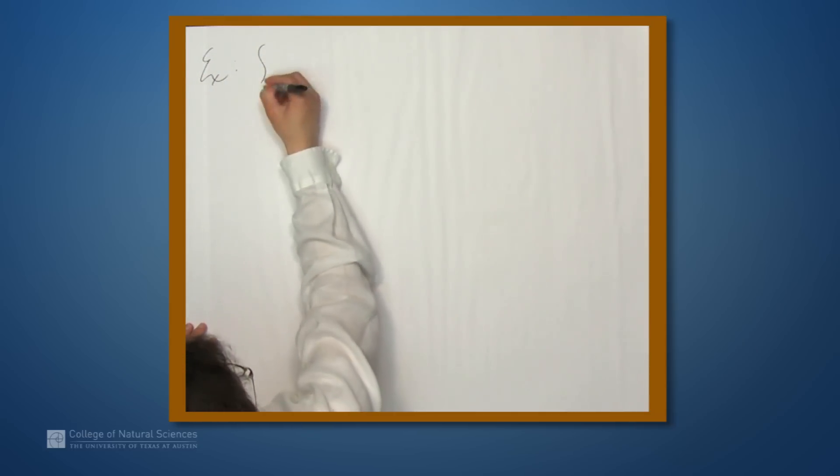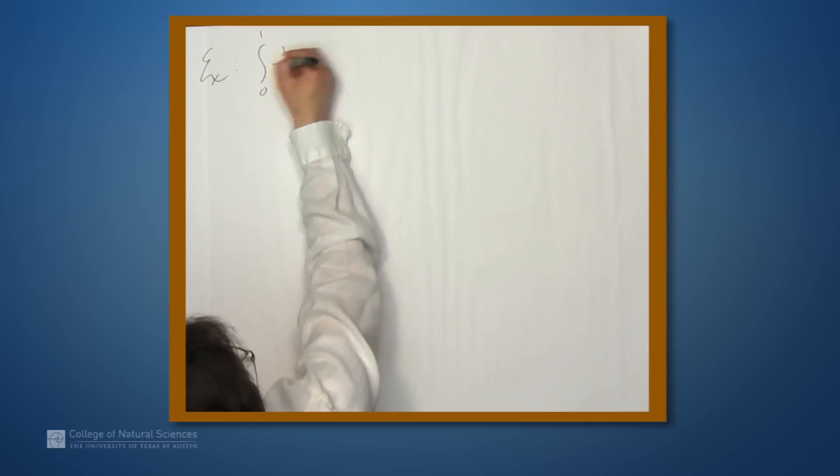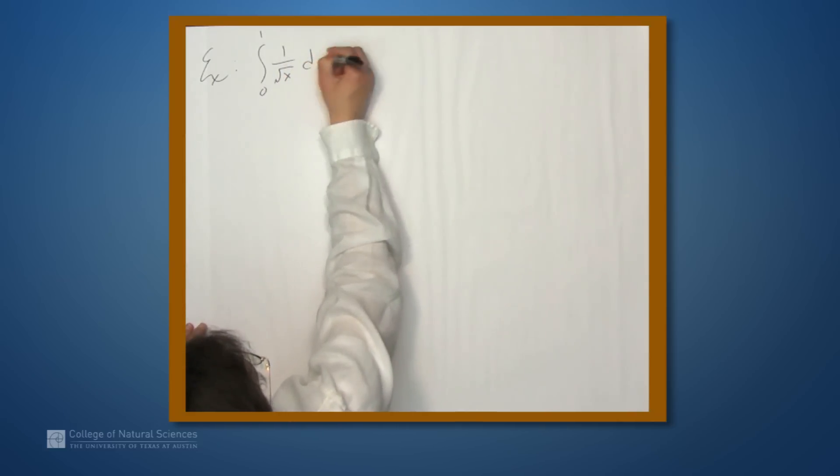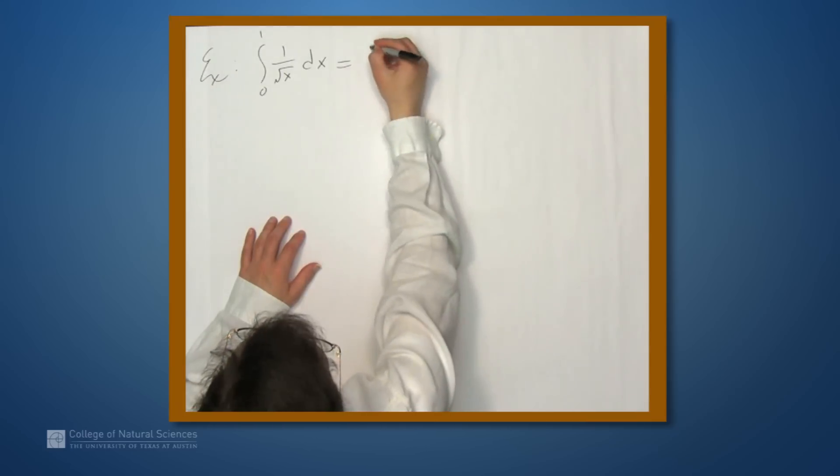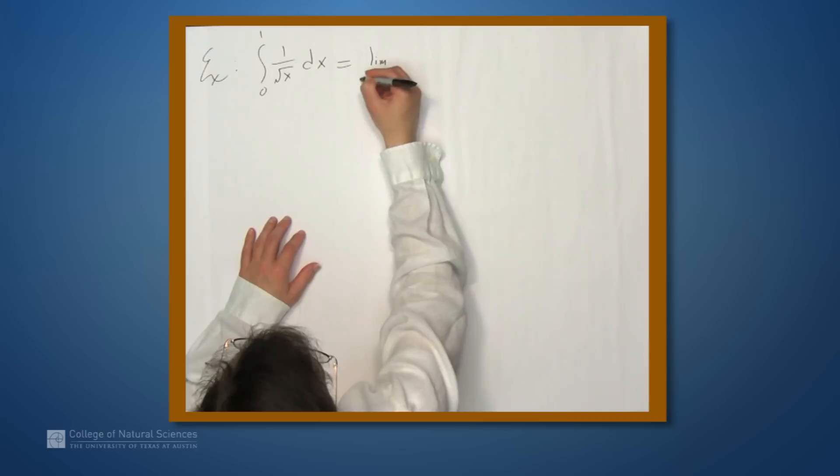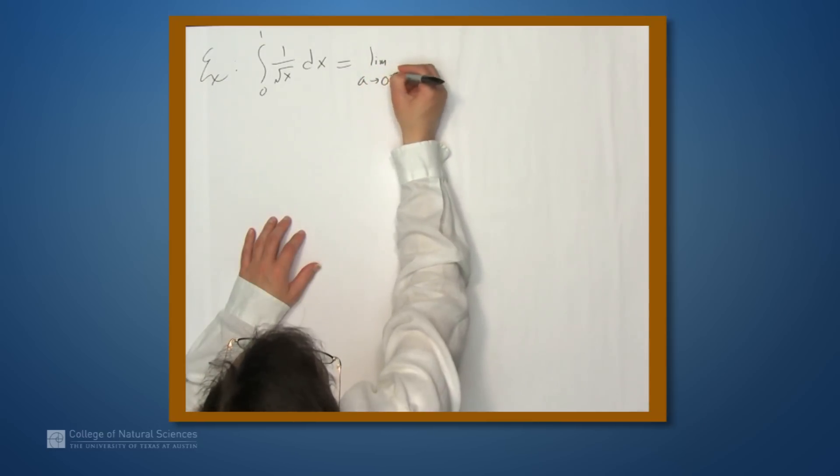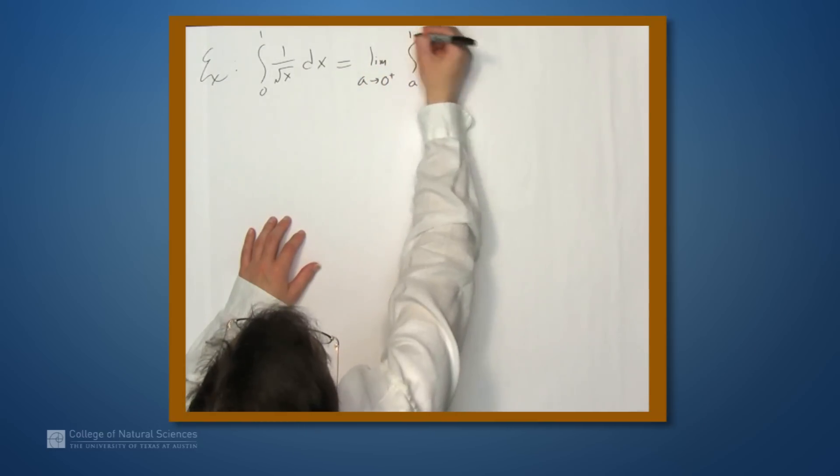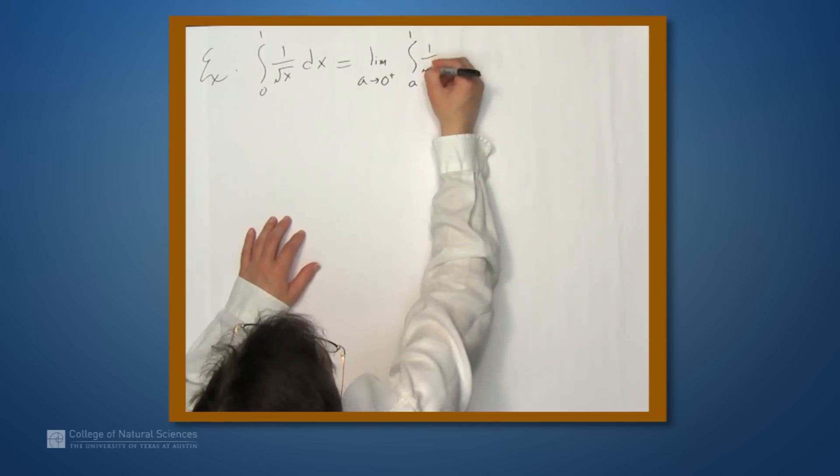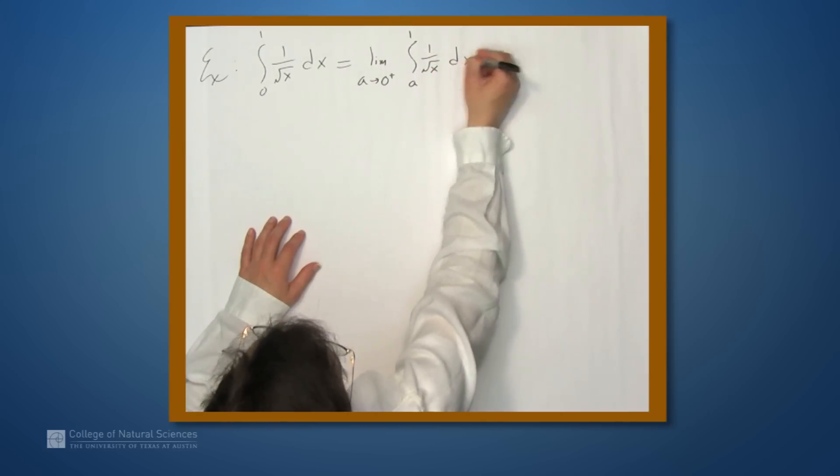Let's now evaluate the integral from 0 to 1 of 1 over, not x, but the square root of x. So, same technique as before. This equals, by definition, the limit as a approaches 0 from above, integral from a to 1, 1 over the square root of x dx.